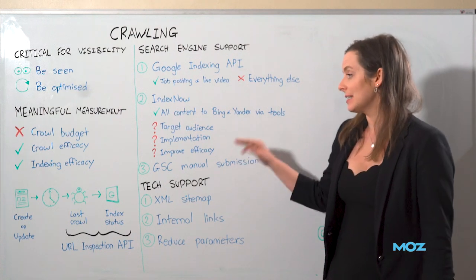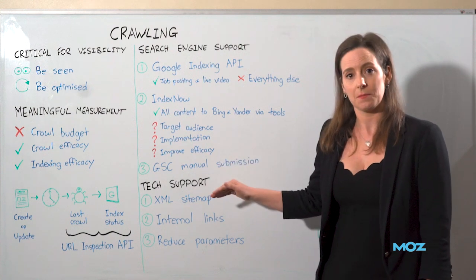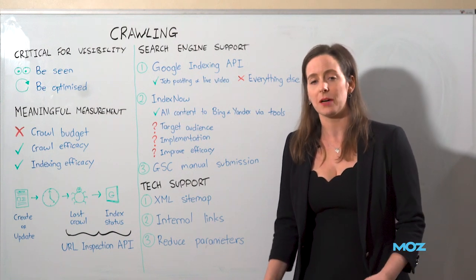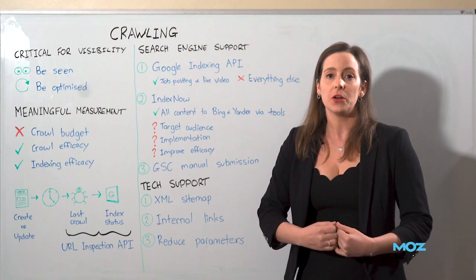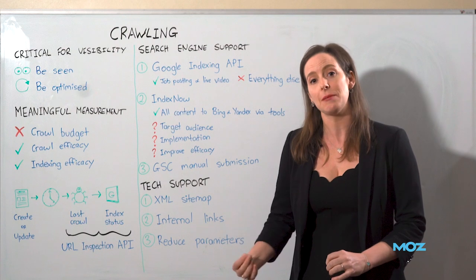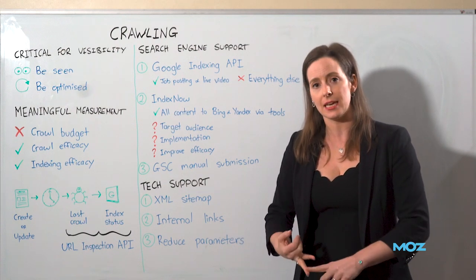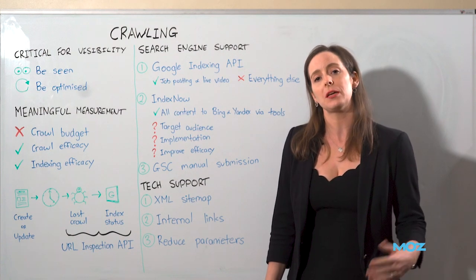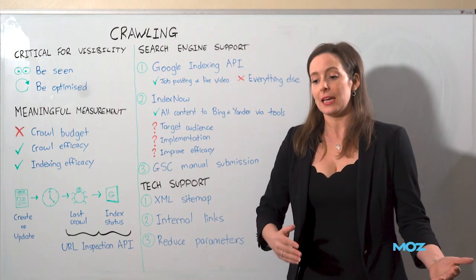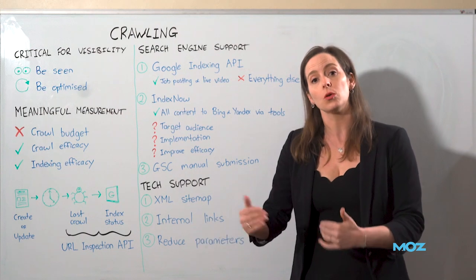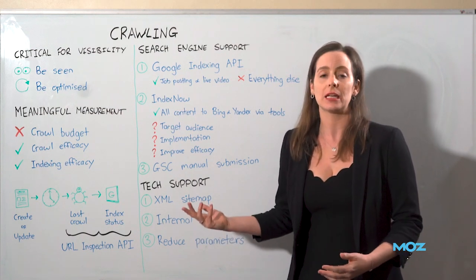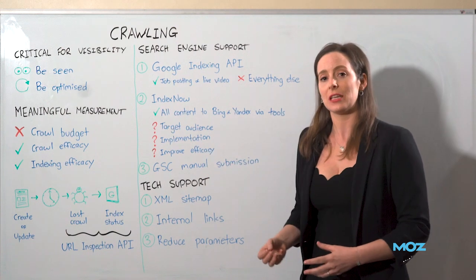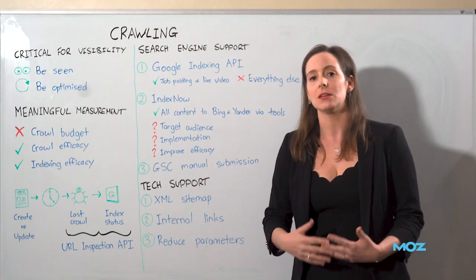The last reason is: does it actually improve efficacy? You must test this for your own website if you feel it's a good fit for your target audience. From my own testing, when I toggled IndexNow on and measured the impact with KPIs that matter — crawl efficacy and indexing efficacy — it didn't actually help me crawl URLs that would not have been crawled and indexed naturally. That crawling would have happened at the same rate whether IndexNow triggered it or not. So all of that integration effort was a wasted opportunity cost.